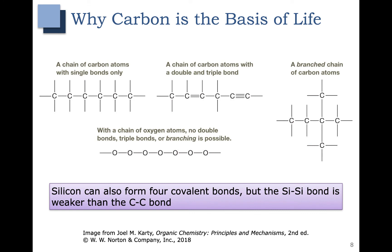Silicon, which is right below carbon in the periodic table, can also form four bonds. But the silicon-silicon bond is weaker than the carbon-carbon bond, and when silicon bonds to other elements like oxygen or nitrogen, those bonds are also weaker. This makes silicon-based compounds more reactive, which is a good reason why silicon is not the basis of life and carbon is. Hopefully that's given you an appreciation for organic chemistry, and you want to make sure you can identify which compounds are organic and which ones are inorganic.